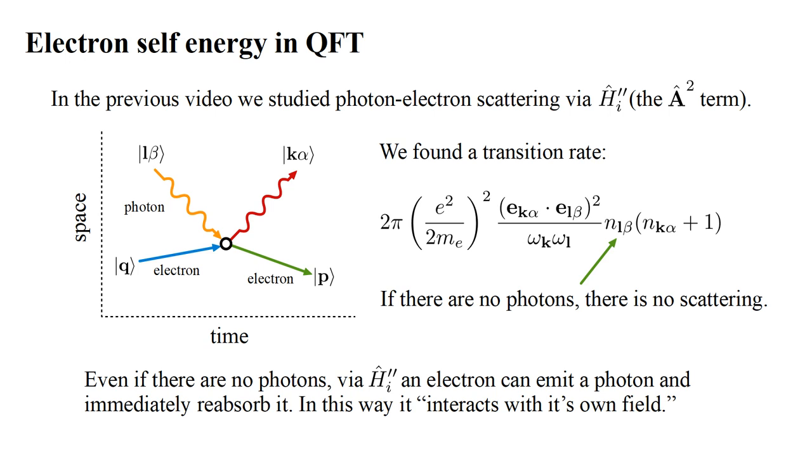However, it turns out that even if there are no photons present initially, via the H-hat-I double-prime term, an electron can emit a photon and immediately reabsorb it. In this way, it interacts with its own field. This is the type of process Oppenheimer was referring to.